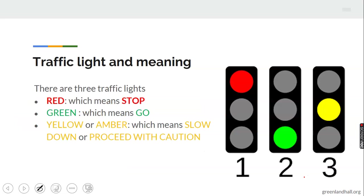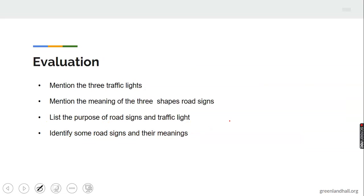Now, talking about traffic lights and their meanings: there are three traffic lights. Red means stop. Green means go. Yellow or amber means slow down or proceed with caution.